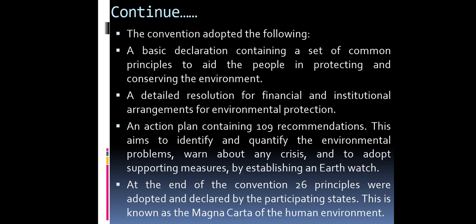The convention adopted the following: a basic declaration containing a set of common principles to aid the people in protecting and conserving the environment; a detailed resolution for financial and institutional arrangements for environmental protection; and an action plan containing 109 recommendations. This aimed to identify and quantify environmental problems and adopt supporting measures by establishing an earth watch. At the end of the convention, 26 principles were adopted and declared by the participating states.